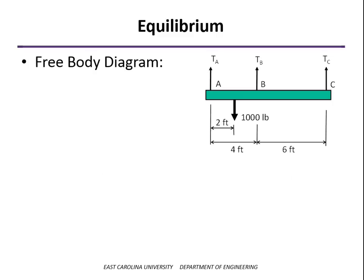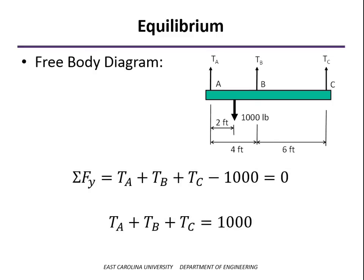We get a second equation from taking the sum of the forces in the y direction. Of course, we have the three tensile forces upward, the 1,000 pounds down, and so this comes up for equation 2. And that's all we're going to get out of equilibrium. The sum of the forces in the x direction would give us a trivial equation because there is no force in the x direction. So we only get two equations to solve for our three unknowns.